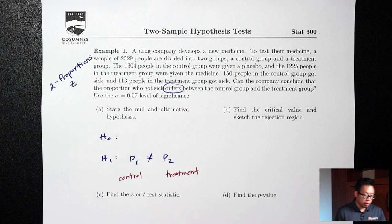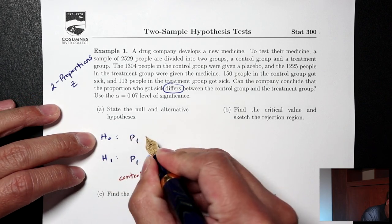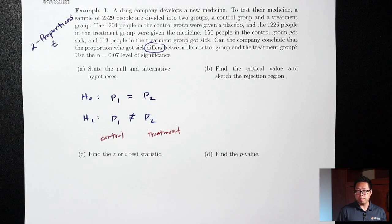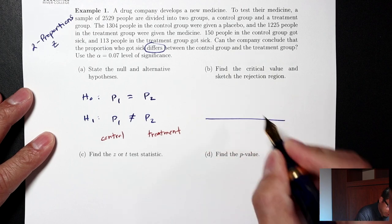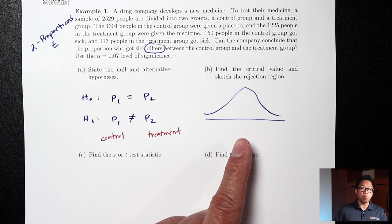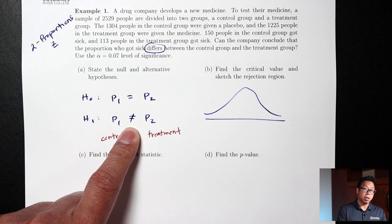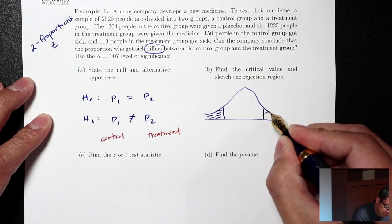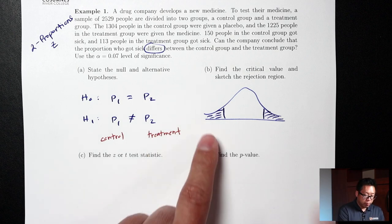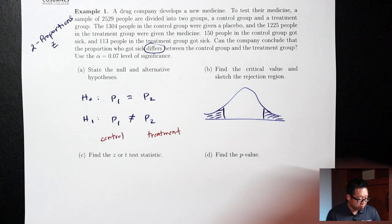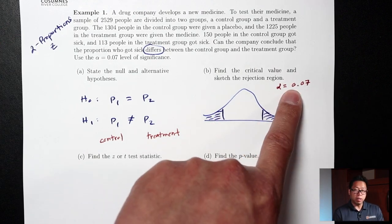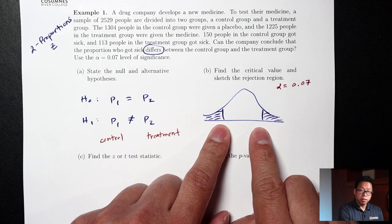H0 should be the same as H1 except with an equals in the middle. So H0 will be P1 equals P2. Part B: find a critical value and sketch the rejection region. We're going to draw the picture — either the Z distribution or the T distribution — shaded to the left, shaded to the right, or two tails. Less than means left, greater than means right, not equals means two tails. Here it's a not-equals, so it will be two tails. The shaded area is our alpha, which is 0.07.